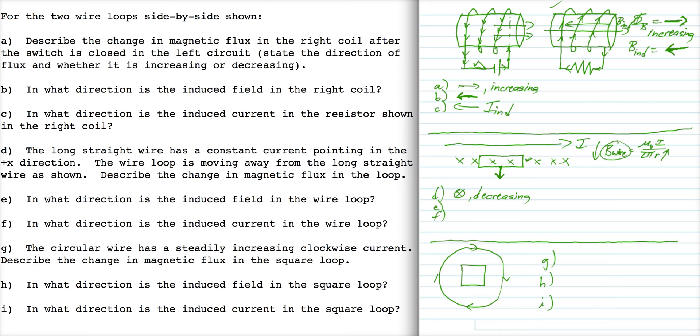The resulting induced field in the loop is going to try to cancel out that change. The loop is going to try to generate x's to replace the x's that are being lost. If the induced field is into the page like that, that can only come if the induced current goes around clockwise.